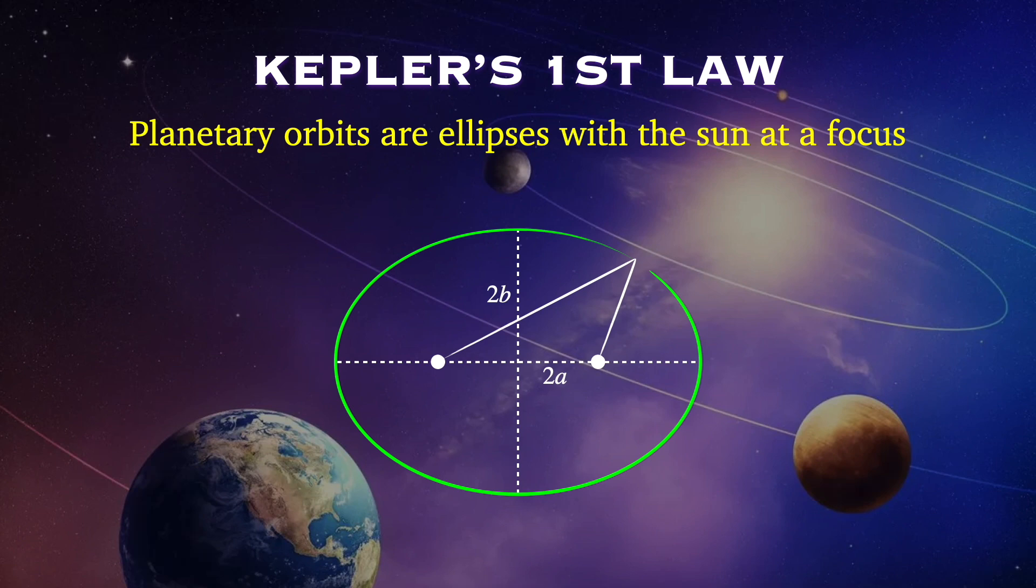The difference in length between the major axis and minor axis is measured using something called the eccentricity. The eccentricity is also related to the distance of the focus points from the center. If the eccentricity is zero, then the major and minor axes have the same length, and the focus points are both at the center. This gives you a circle. The larger the eccentricity, the more stretched out the ellipse is.